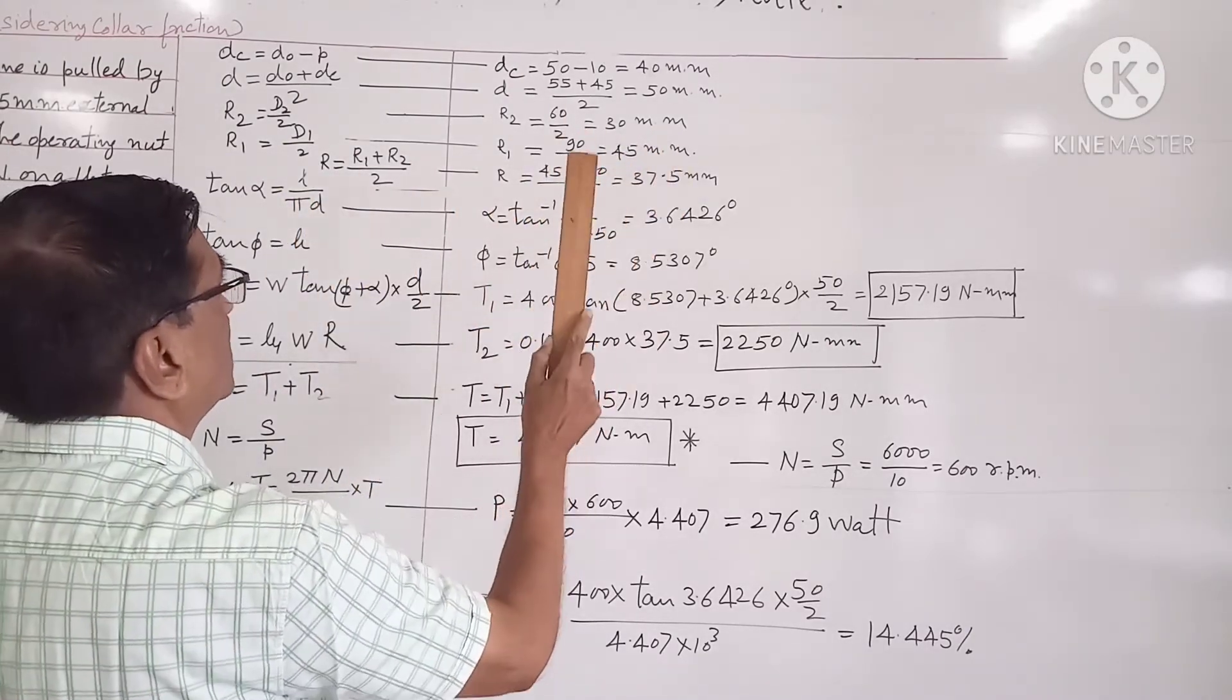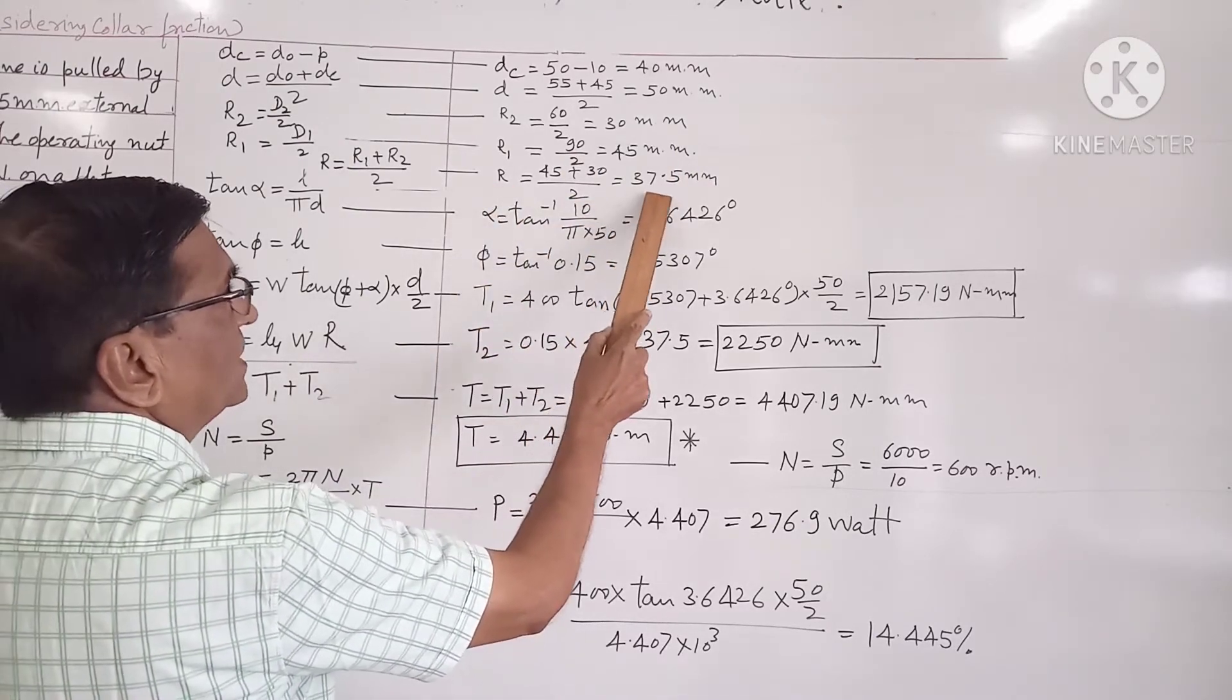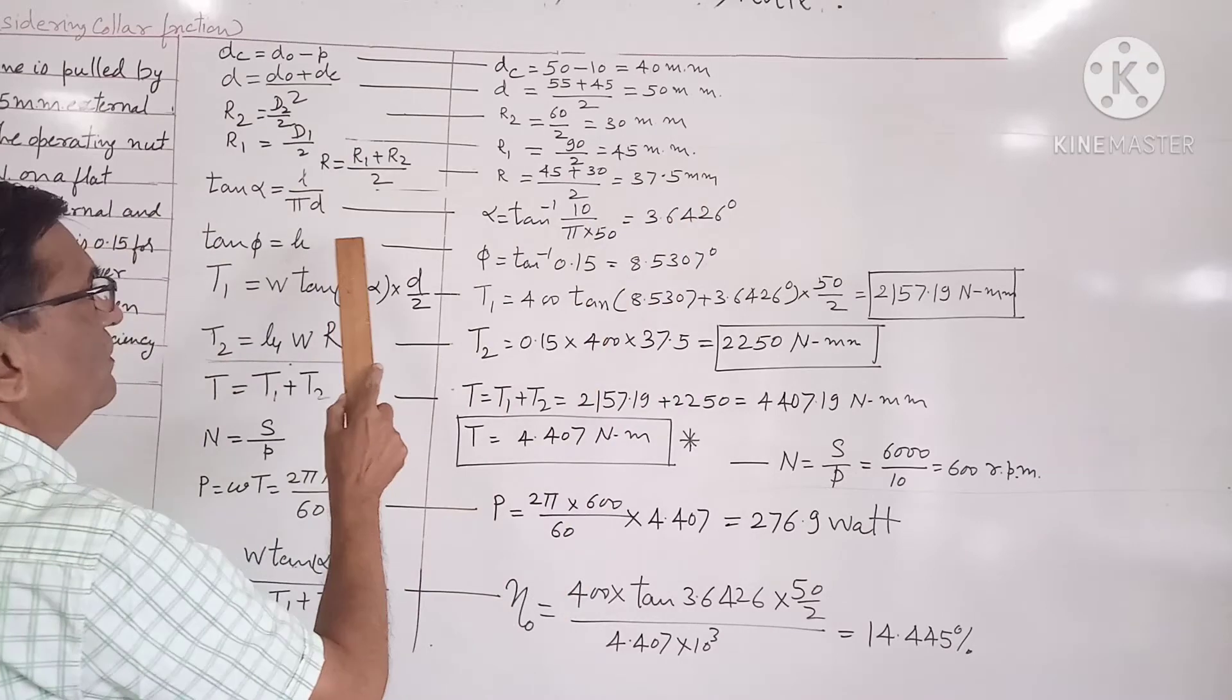So mean collar radius comes out to be 37.5 mm.